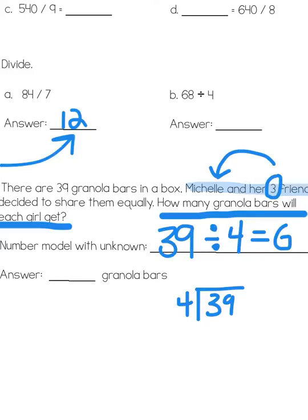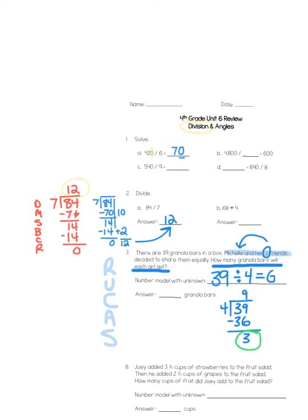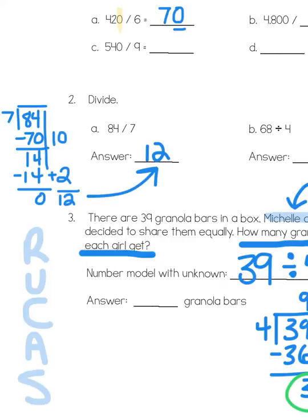Now, off the top of my head, I know that 9 times 4 is 36. So, I can just skip a couple steps and put the 9 up here at the top because 9 times 4 is 36. If I subtract the difference, that leaves me with 3. 3 extra granola bars. Now, the question is, how many granola bars will each girl get? They're going to get 9 granola bars.